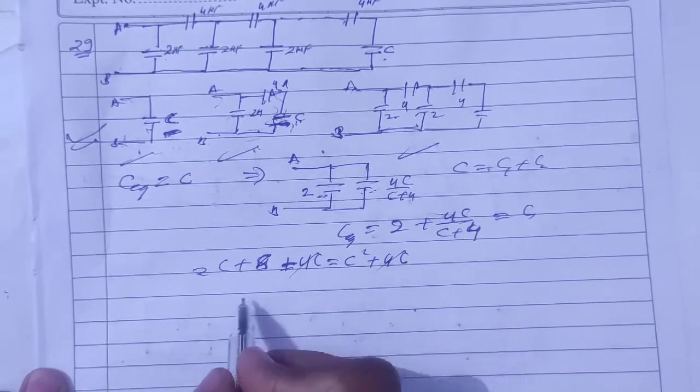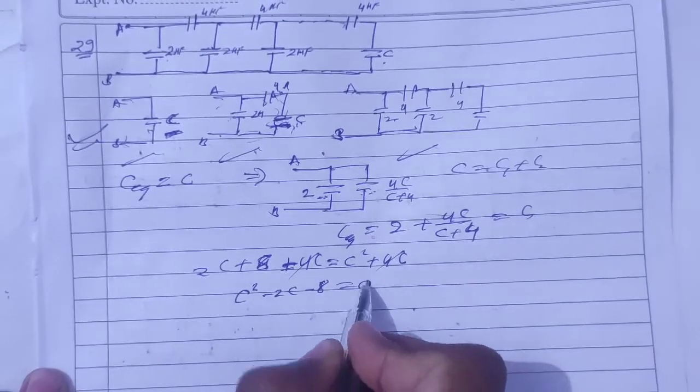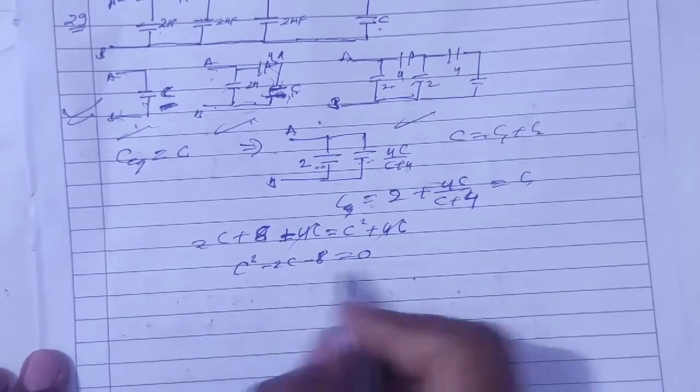4C cancel out. C square minus 2C minus 8 is equal to 0. Now apply the quadratic formula.